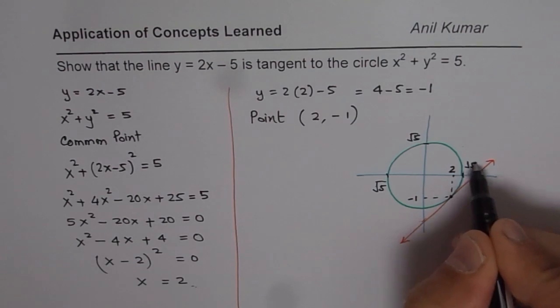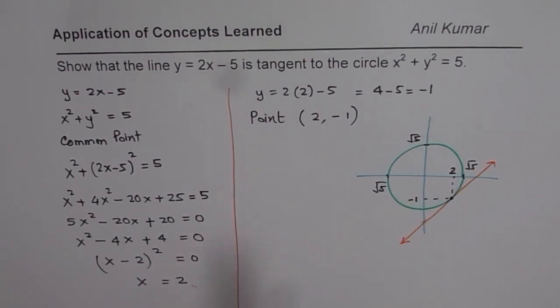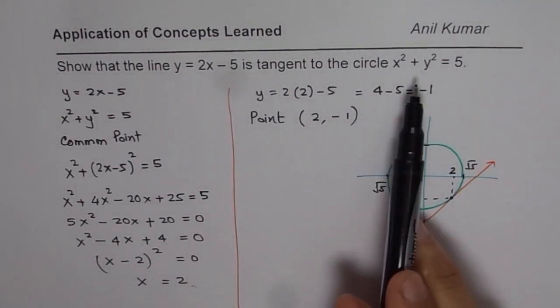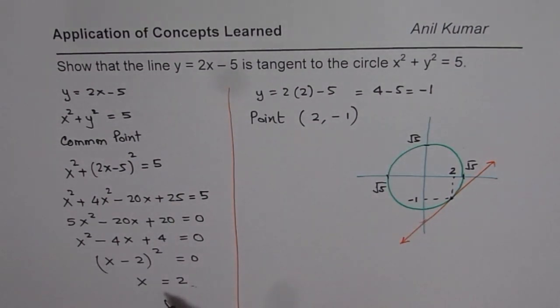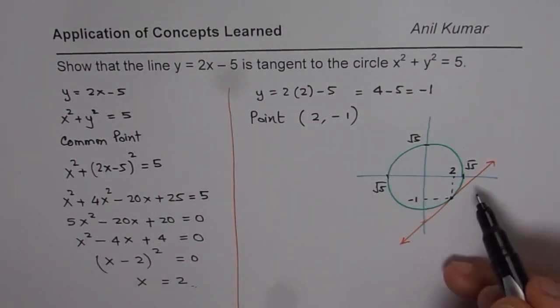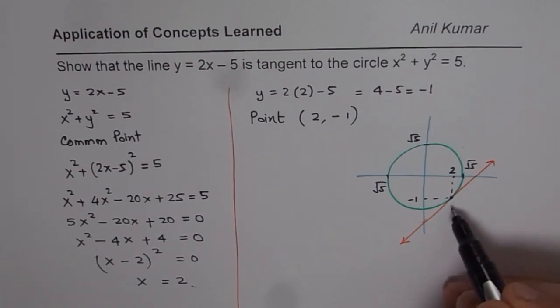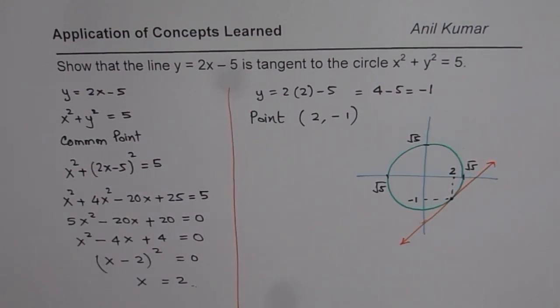So that is how you can actually prove since the line and the curve, they touch at one point, and they touch at only one point, we can show that it is tangent. That is one way of finding it. So I hope that helps.